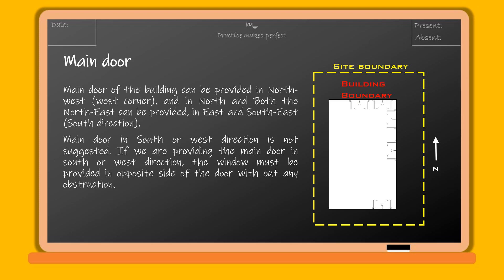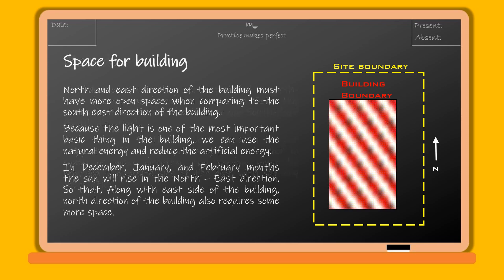If we are providing the main door in the south or west direction, the window must be provided on the opposite side of the door without any obstruction. The north and east directions of the building must have more open space compared to the southeast direction, because light is one of the most important basic requirements in a building.